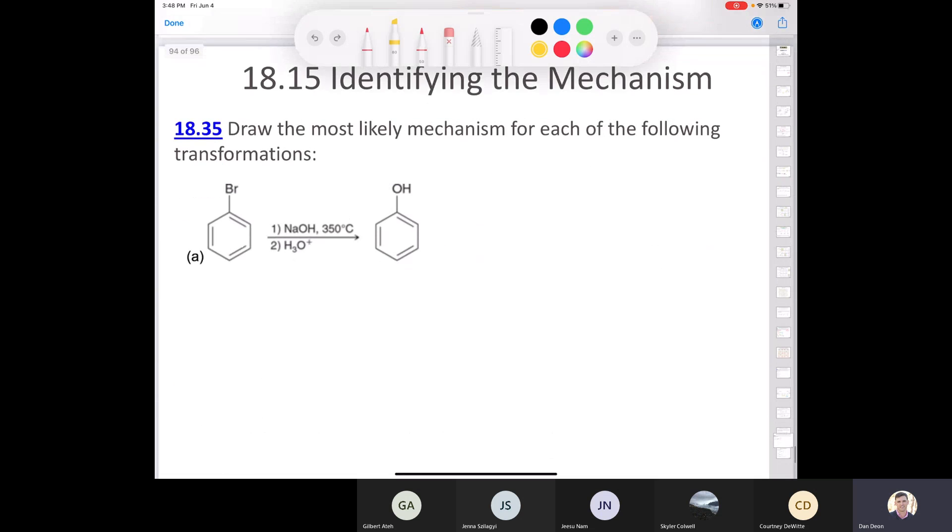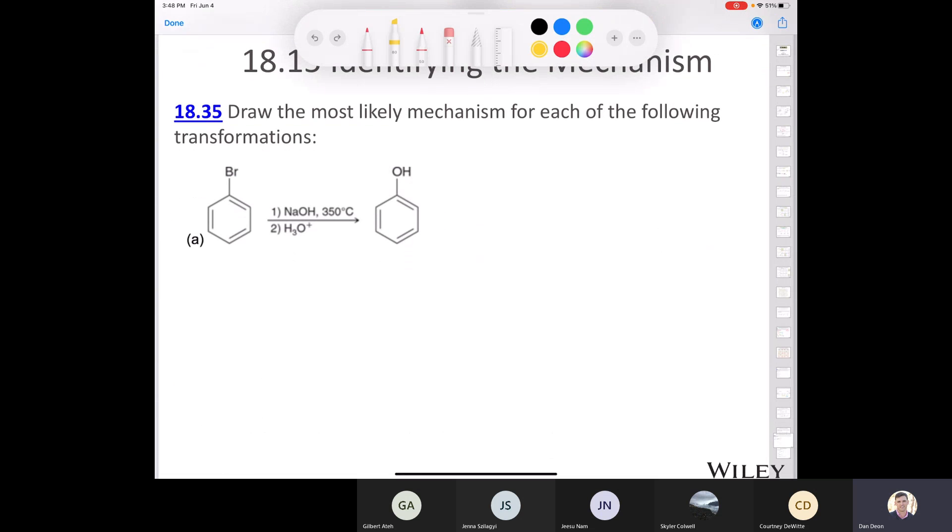Alright. Well, with that, let's take a look. This is the last question that I have in the slide deck, which says, draw the most likely mechanism for each of the following transformations. Well, there's only one. And we have sodium hydroxide at 350 degrees Celsius. We don't have a strong electron withdrawing group, and so we have a good nucleophile, but we don't have an electrophile. So this is definitely going to be an elimination addition reaction, isn't it? It's not set up for an SNAR, right? It's not an electrophilic aromatic substitution. It's not an SNAR reaction because we don't fulfill the criteria for that. So this is an elimination addition reaction.